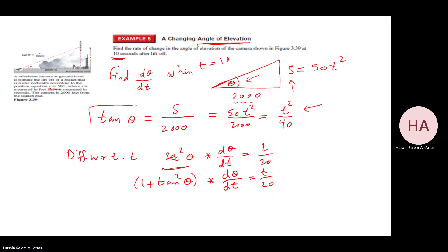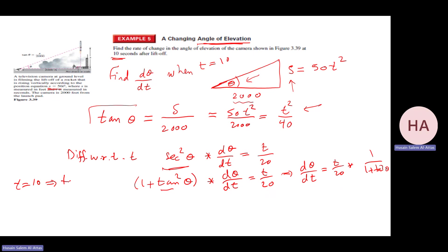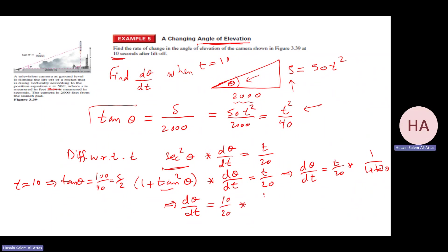Now I'm done. tan θ = t²/40, so dθ/dt = (t/20) · 1/(1 + tan²θ). At t = 10: tan θ = 100/40 = 5/2. So dθ/dt = (10/20) · 1/(1 + 25/4) = (1/2) · (4/29) = 2/29.